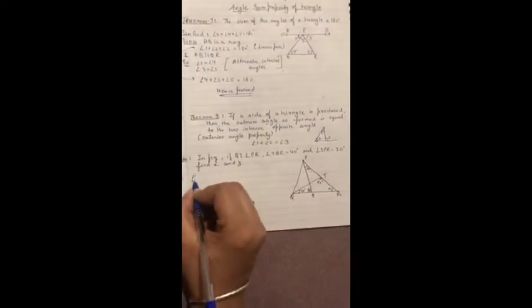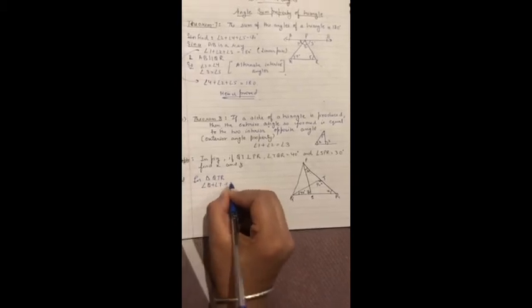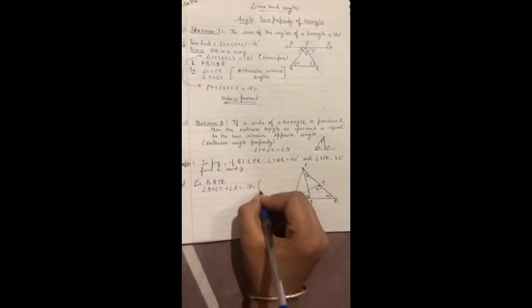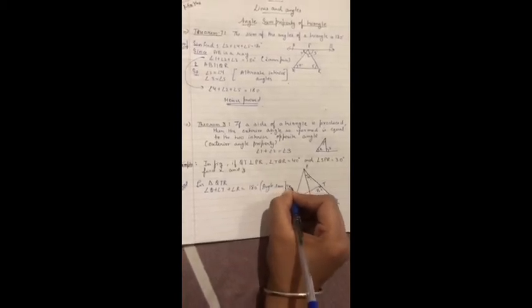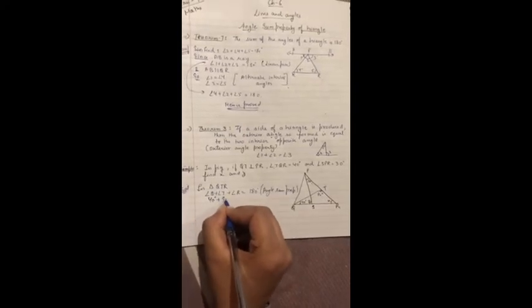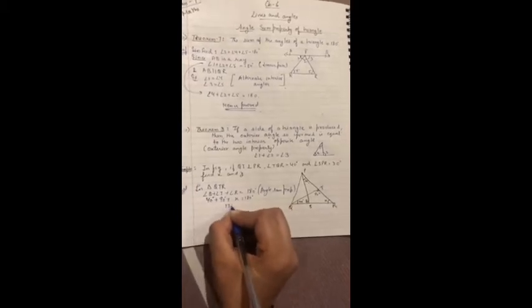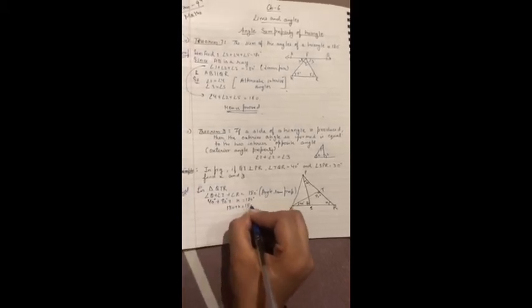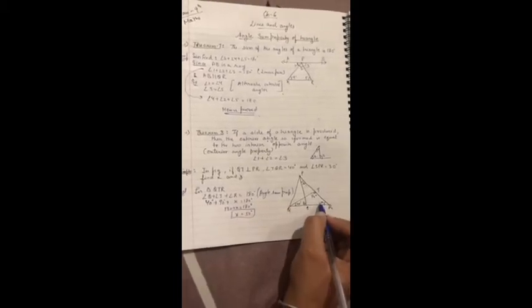Now see, in triangle QTR, angle Q plus angle T plus angle R is equal to 180 degree by angle sum property. Angle Q 40 degree plus angle T 90 degree plus X is equal to 180 degree. That means 130 plus X is equal to 180 degree. So X is equal to 50 degree.